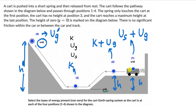We see that energy transformations happen within a closed system. There can be one type of energy which is then changed to another type of energy, but the total energy of the system remains constant. So the total energy of the system at position 1 equals the total energy at position 2, which is the same as the total energy at position 3 and the total energy at position 4.